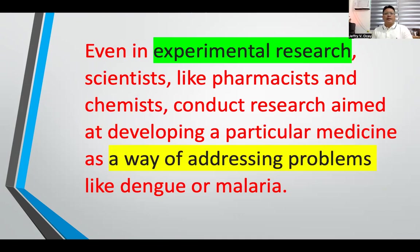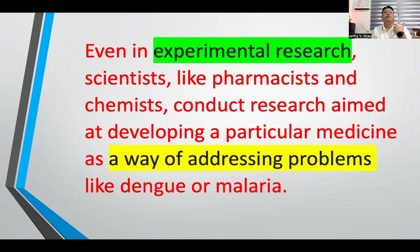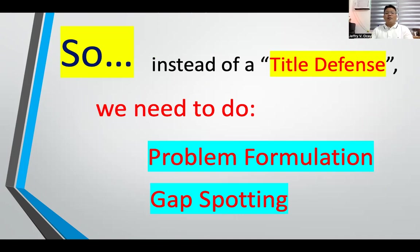Even in experimental research, scientists like pharmacists and chemists conduct research aimed at developing a particular medicine as a way of addressing problems like dengue or malaria. They respond to a serious threat, respond to a problem, and so they conduct research. Instead of the famous title defense, we need to do problem formulation or gap spotting.